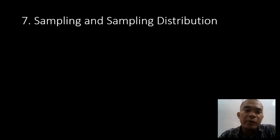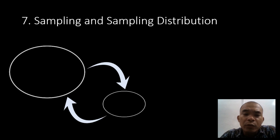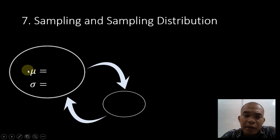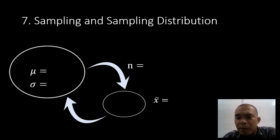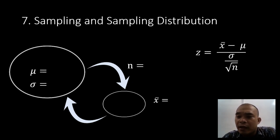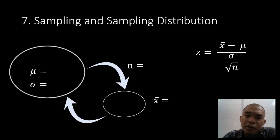We will start our review on sampling and sampling distribution. In a particular problem where the population mean and population standard deviation are given, we will take a certain sample from that population and compute the sample mean. If that's the given, we will use this formula: Z equals X-bar minus mu, divided by the population standard deviation divided by the square root of n. In this particular set, we will only memorize three formulas.